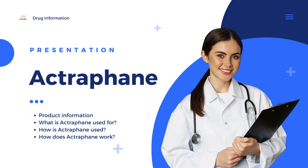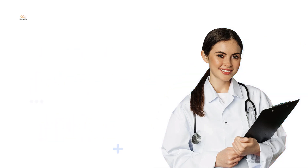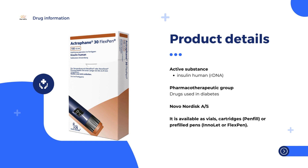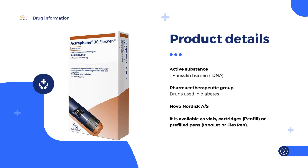Actrophane 30: soluble insulin 30% and isophane insulin 70%. Actrophane 40: soluble insulin 40% and isophane insulin 60%. Actrophane 50: soluble insulin 50% and isophane insulin 50%.